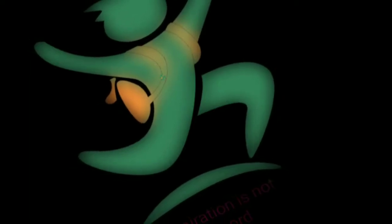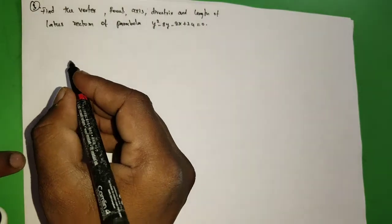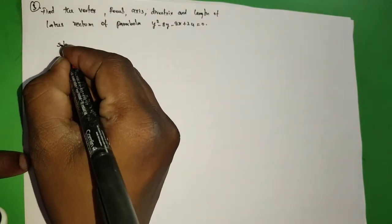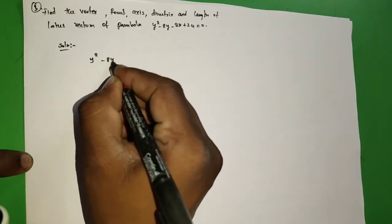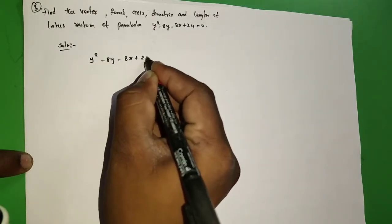Welcome to VIP Maths. Find the vertex, focus, axis, directrix, and the length of latus rectum of parabola. Given parabola: y² - 8y - 8x = 24.